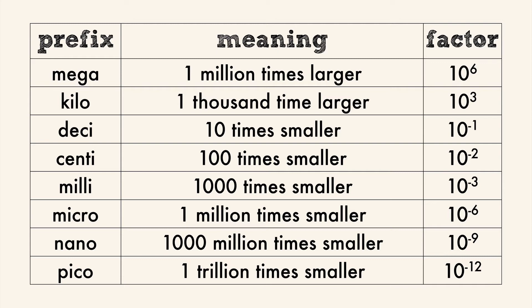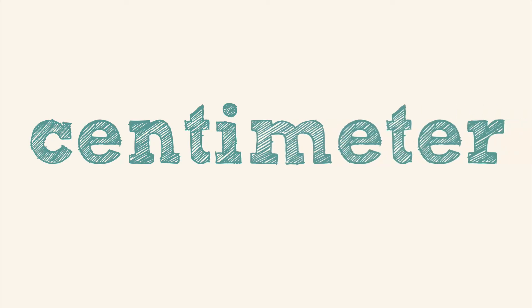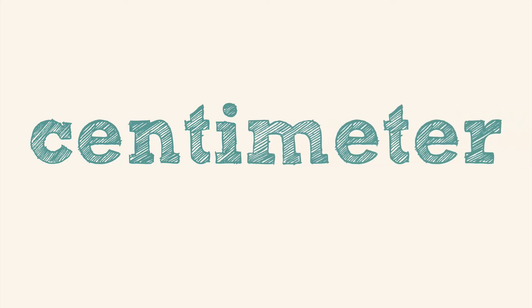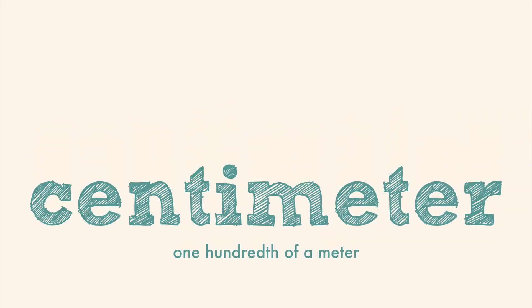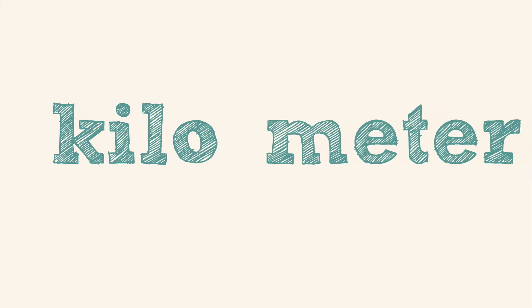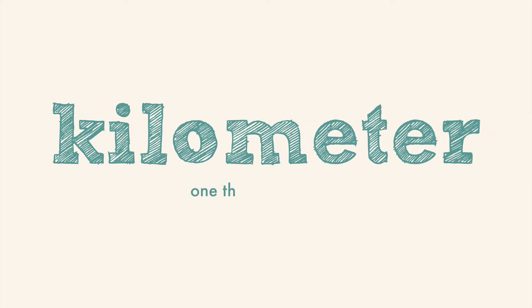We can put the prefix in front of the base unit to create a new sort of unit. For example, if we take the unit centi and put it in front of meter, we get a unit that is one hundredth of a meter. Or put kilo in front of meter, and it's one thousand meters long.